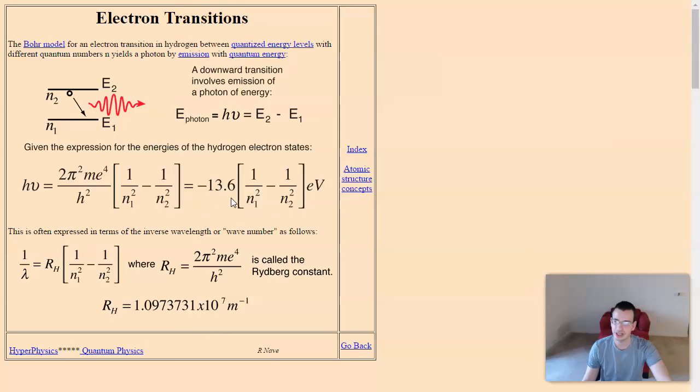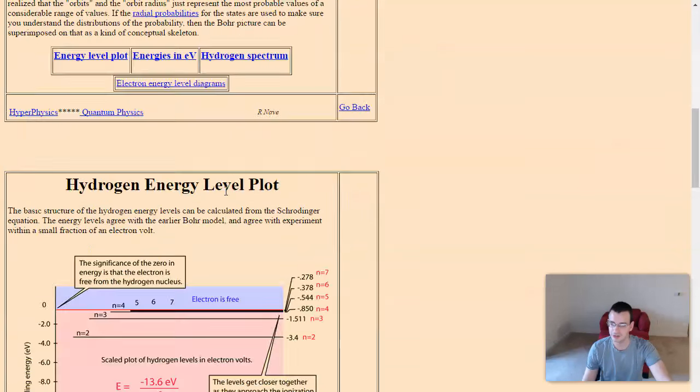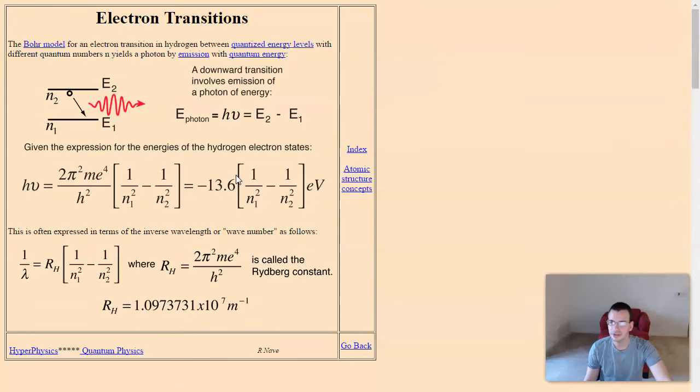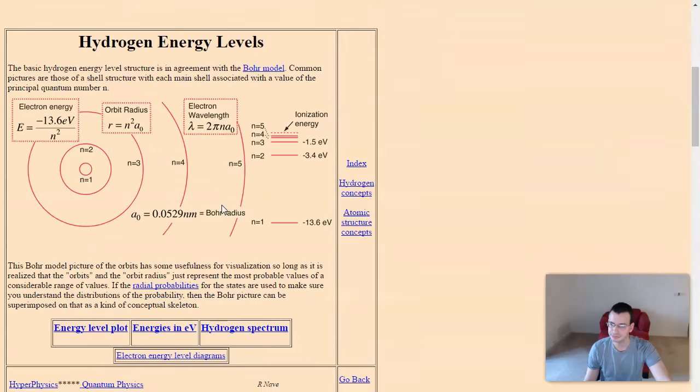Alright, so the energy at any level is 13.6 divided by n squared. Maybe they'd give us somewhere. Why is that not somewhere? There we go. Energy equals 13.6 electron volts over n squared.